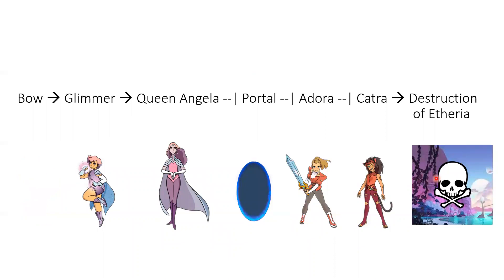What about if Bo weren't there? Then no one would be able to activate Glimmer, so Angela is never activated, and so the portal will inhibit Adora and Catra will destroy Etheria.